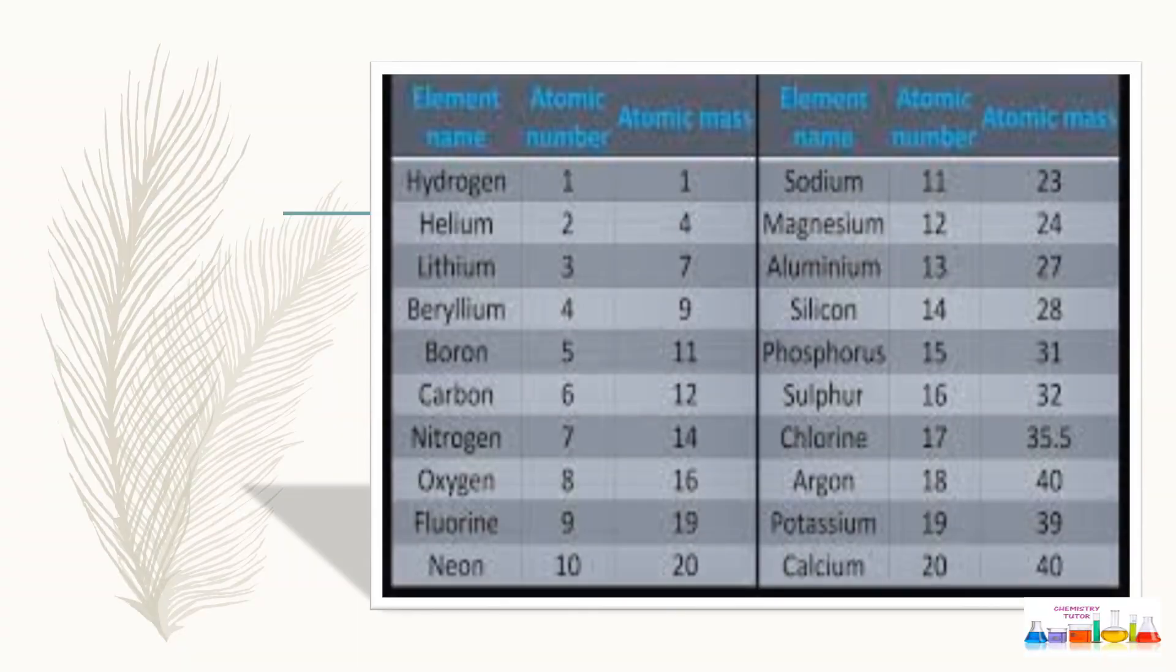This chart on your screen is showing the first 20 elements with their atomic number and atomic mass. Let's see how we can memorize these atomic masses. I'm going to divide these 20 elements into two categories: even numbers and odd numbers.